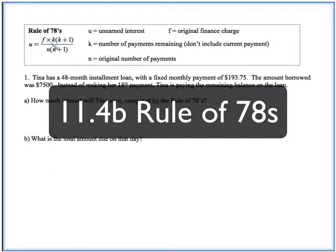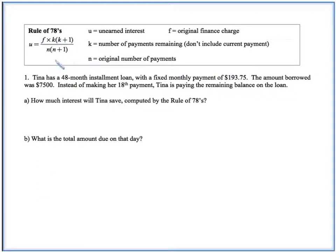Here's the rule of 78s, and it's this formula right here. U is the unearned interest, so that's what we're going to be looking for. F is the original finance charge, so if you paid out the entire loan in its entirety, how much interest did you pay? K is the number of payments remaining, and it's important not to include the current payment where you want to pay everything off. So how many payments after that would you still have? And then N is the original number of payments.